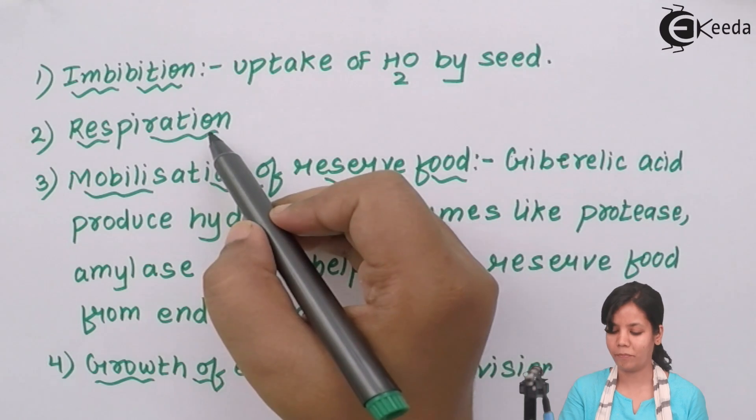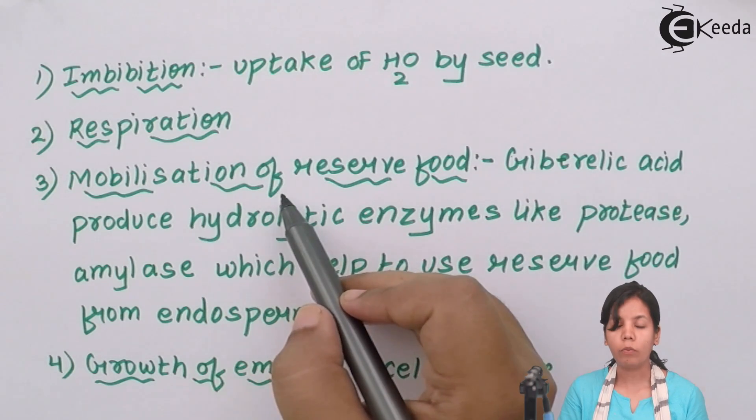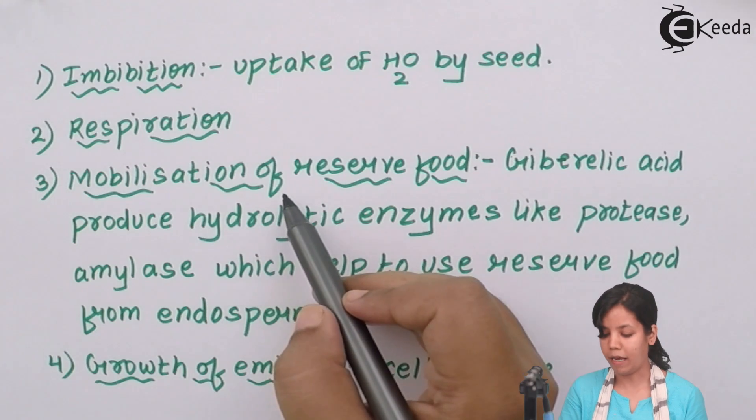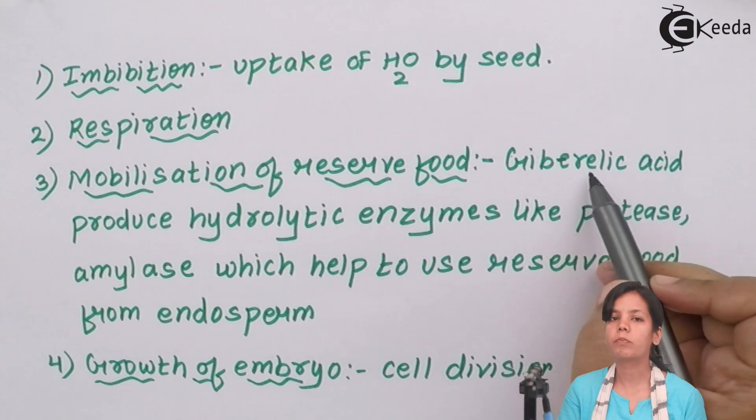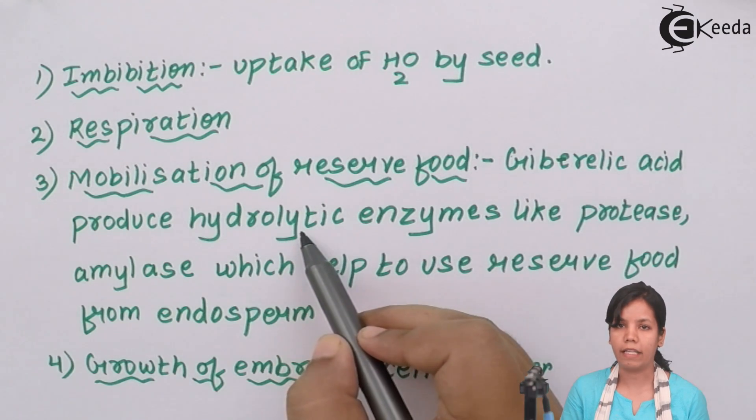The third step, while growing we all need food, similarly plants they need to use food. Now gibberellic acid that is produced in plants produce hydrolytic enzymes.